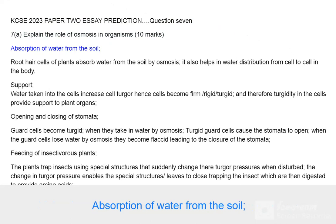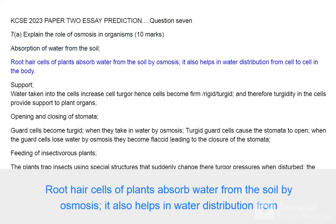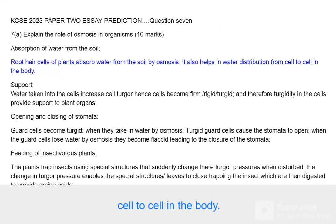Absorption of water from the soil: Root hair cells of plants absorb water from the soil by osmosis. It also helps in water distribution from cell to cell in the body.